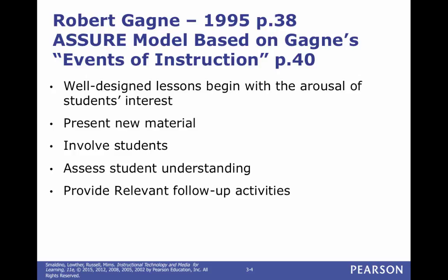Robert Gagne, in 1995 — it's on page 38 — the ASSURE model was based on Gagne's events of instruction. He was the person who did the research and realized that well-designed lessons begin with the arousal of students' interest. First you get students engaged with a hook, then you present new materials and involve students with activity. Last, you assess students' understanding and provide follow-up activities. This is what we use in the classroom today, and the ASSURE model is based on this.